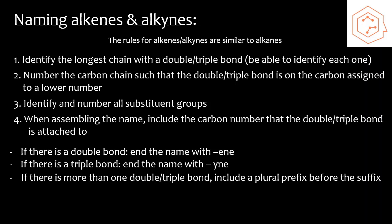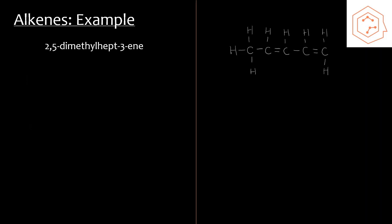Here are two examples for alkenes. The first is a drawing example for 2,5-dimethylhept-3-ene. The parent chain is seven carbons long, identified from the root 'hept'. We go ahead and draw a seven-carbon chain. I've also numbered the carbon chain — starting from the left side, though you can start from the right side as long as you're consistent and you'll end up with the same result.